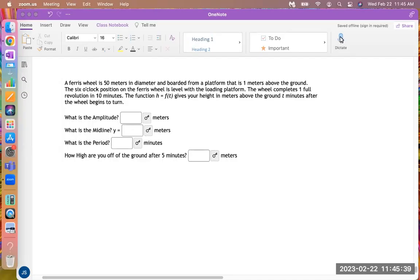A ferris wheel is 50 meters in diameter and boarded from a platform that is one meter above the ground. The 6 o'clock position on the ferris wheel is level with the loading platform and the wheel completes one full rotation in 10 minutes. The function h equals f gives the height in meters above ground in 10 minutes after the wheel has begun to turn.